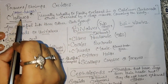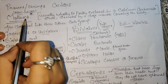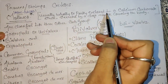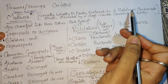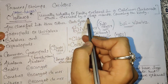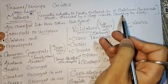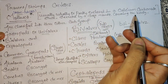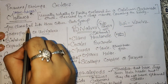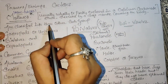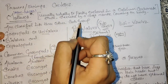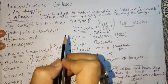Now let's study molluscs. Molluscs are usually wholly or partially enclosed in a calcium carbonate shell, secreted by a soft body covering. They are classified into three subgroups.